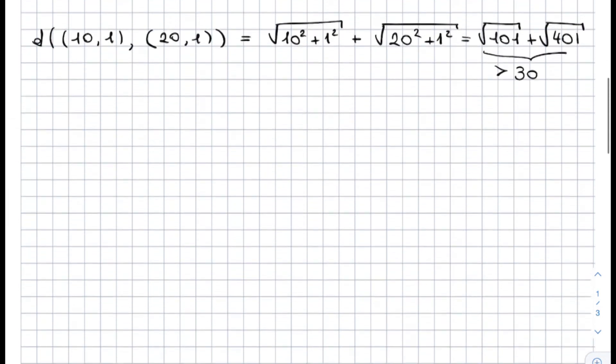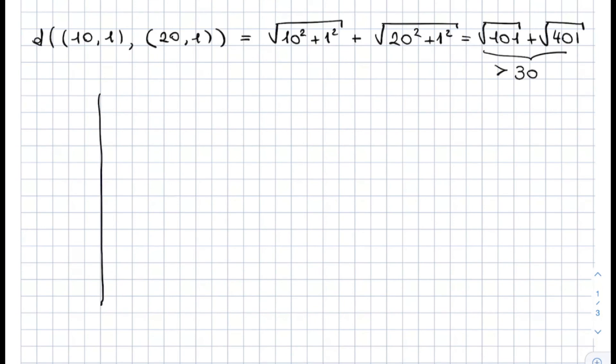However, if you draw the two points in the plane, you can see that these two points are not that far apart. So if this is 2, 4, 6, 8, 10, then we have 12, 14, 16, I need to make it longer, 18, 20. Then the points are here and here. So they're not so near,